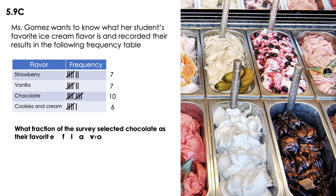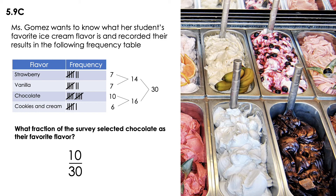What fraction of the survey selected chocolate as their favorite flavor? When asking for a fraction, I have to look for the total first. The total is 30, so 30 is my denominator, and the numerator is 10 because they selected chocolate. What is 10 out of 30 simplified? It's equal to one out of three, or one third.